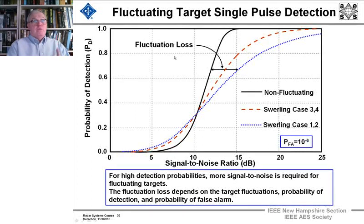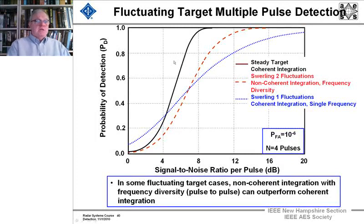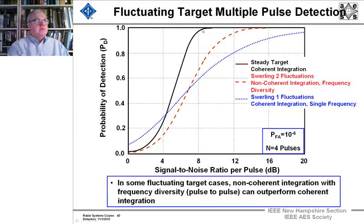So far we've only looked at the detection of one pulse. When we look at multiple pulses, things get more interesting. We're looking still with a probability of false alarm of 10 to the minus 6, at the integration of four pulses under three cases: a steady target with coherent integration of the four pulses in the black line, and then Swerling 2 fluctuations where non-coherent integration takes place, using frequency diversity to make the pulses independent from one another.